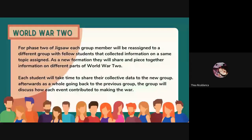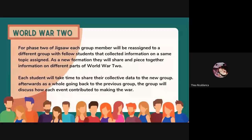For phase two of the Jigsaw, each group member will be reassigned to a different group with fellow students who collected information on the same assigned topic. For example, student one will go to a group focused on Hitler's rise to power, and so on. In this new formation, they will share and piece together information on different parts of World War Two. Each student will share their collective data to the new group, and then go back to their original Jigsaw group to discuss how each event contributed to making the war.